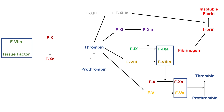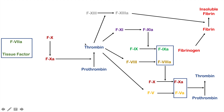Here is the coagulation cascade. We're going to quickly go over it, but if you want more information, please check out my coagulation cascade lesson. Activated factor VII and tissue factor work together to activate factor X to activated factor X. Activation of these factors involves proteolytic cleavage of the precursor. Activated factor X will then proteolytically cleave small amounts of prothrombin to small amounts of thrombin.